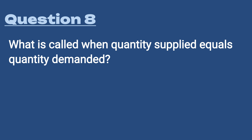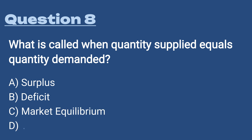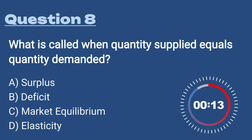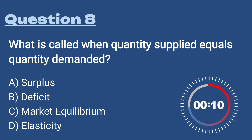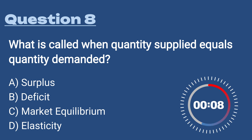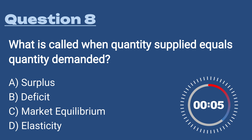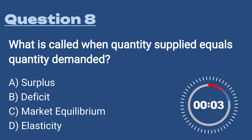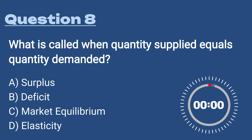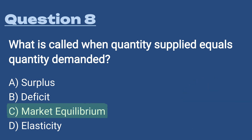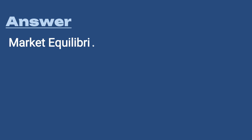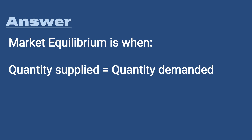Question number eight: what is it called when quantity supplied equals quantity demanded? A) Surplus, B) Deficit, C) Market equilibrium, D) Elasticity. The answer is C, market equilibrium — when quantity supplied, what is brought to the market, equals quantity demanded, what is demanded out of the marketplace. This is when you are living in economic harmony.